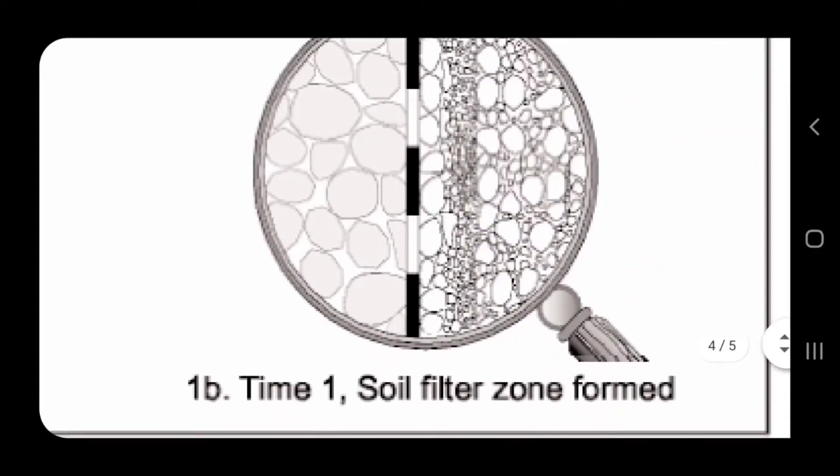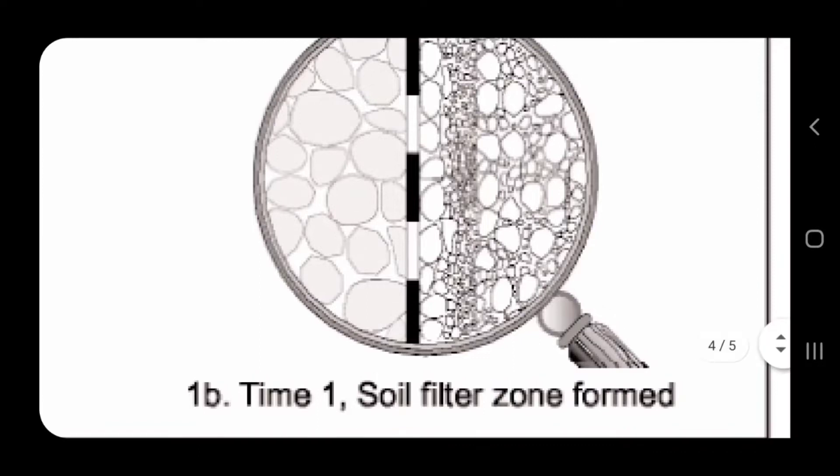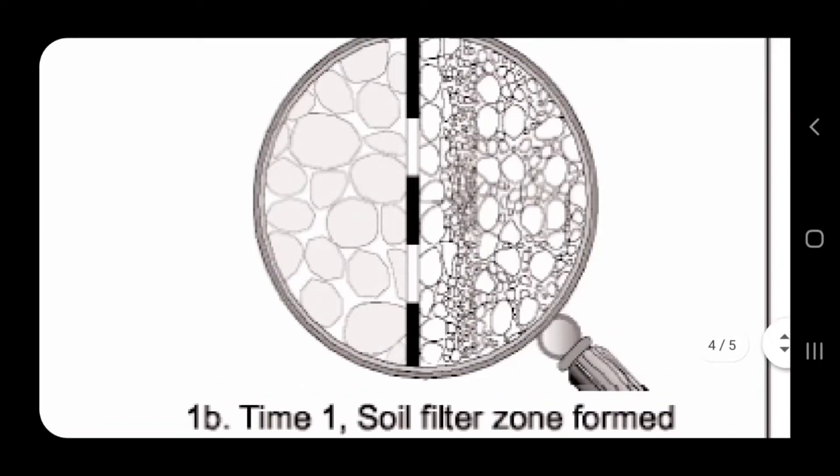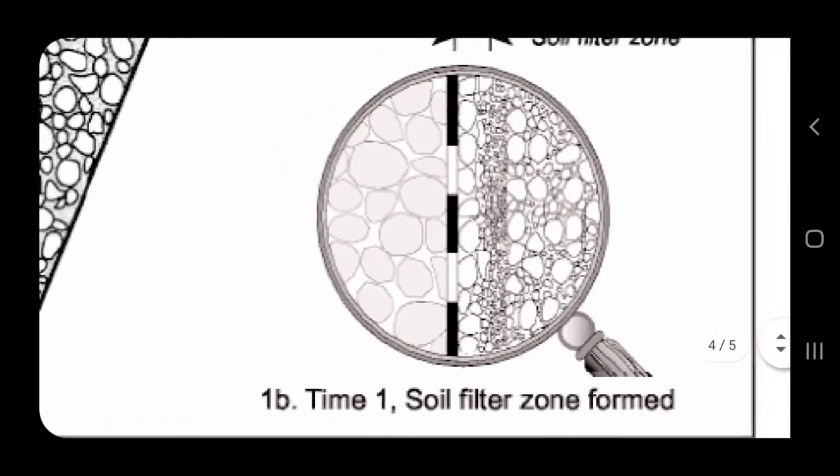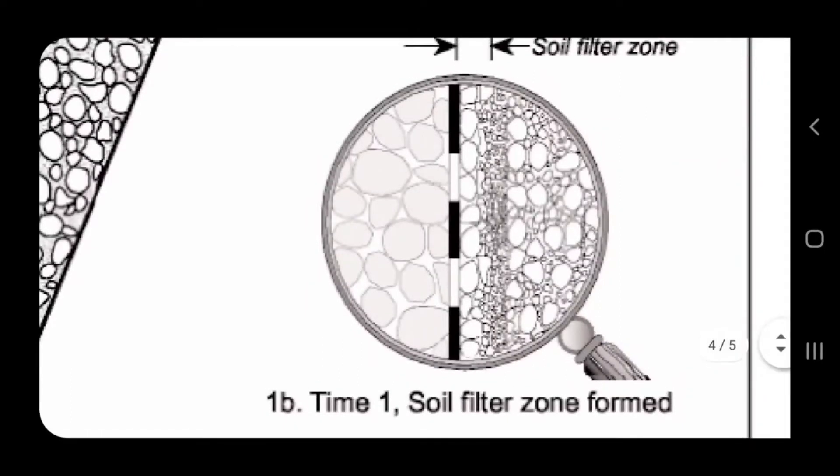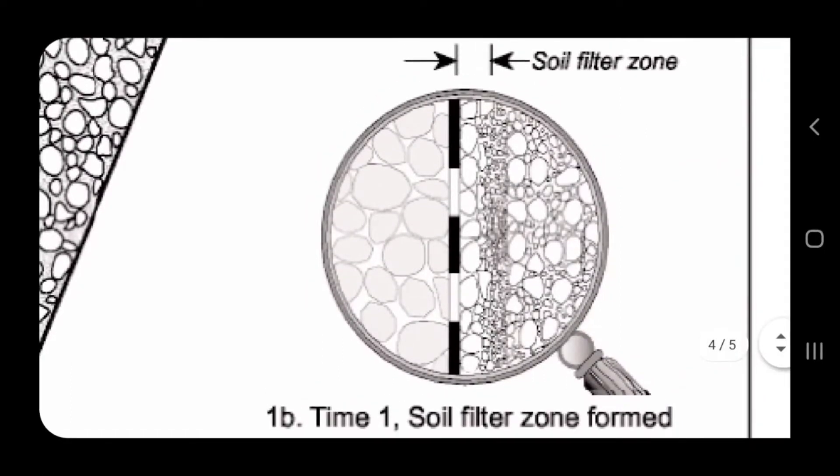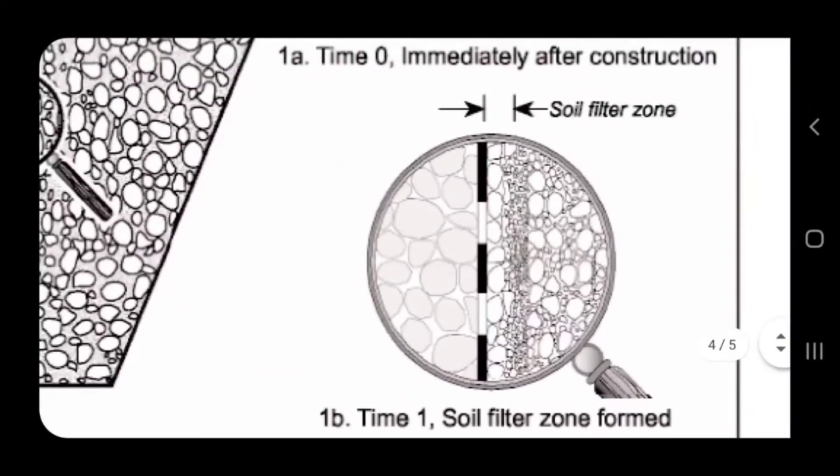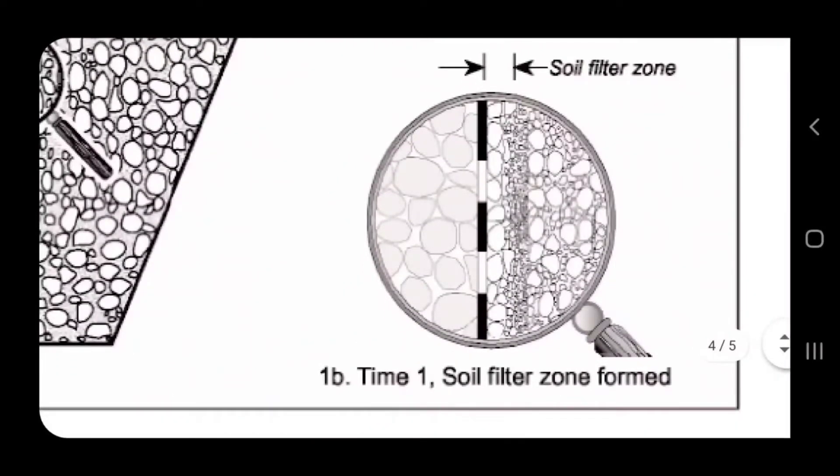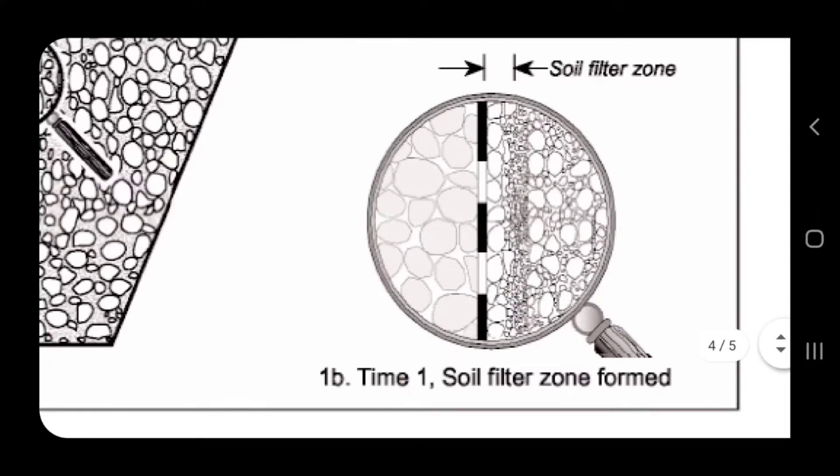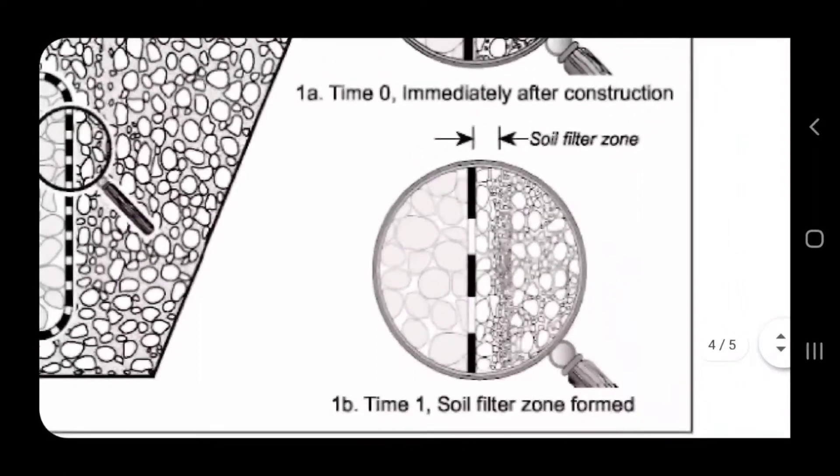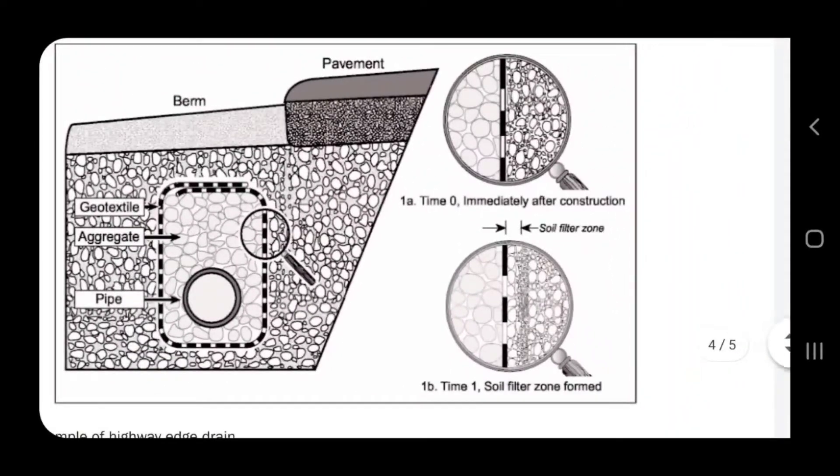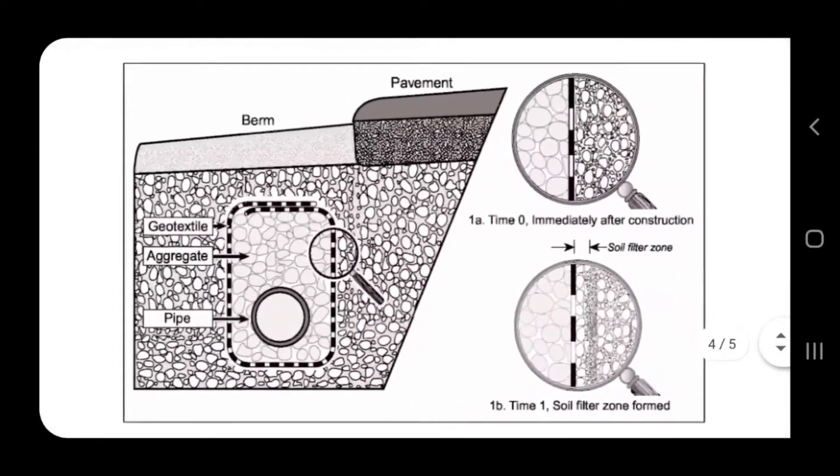The reason why our fabric works better and better and better is because as time goes on and more sediment washes through the non-woven geotextile double punch fabric, the better the soil filter zone that is formed becomes. This soil filter zone that forms between the non-woven geotextile fabric that's double punched and the native soil - that is key...